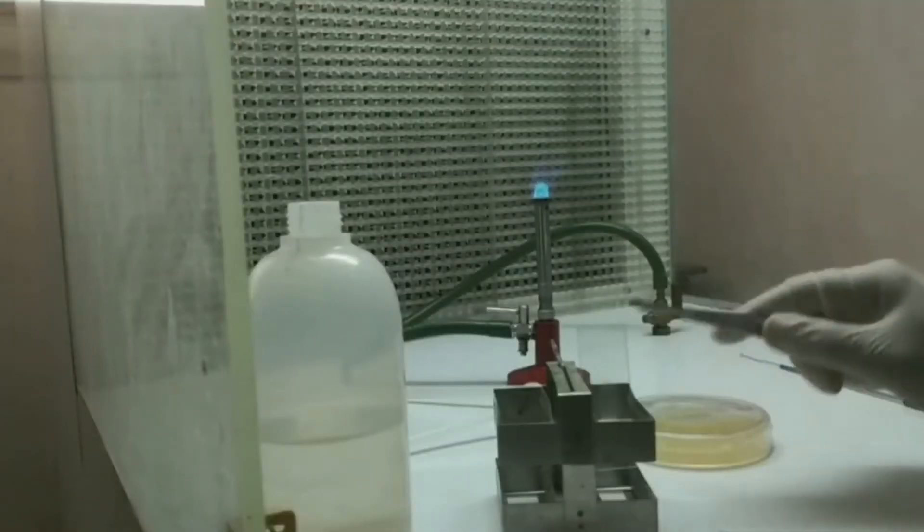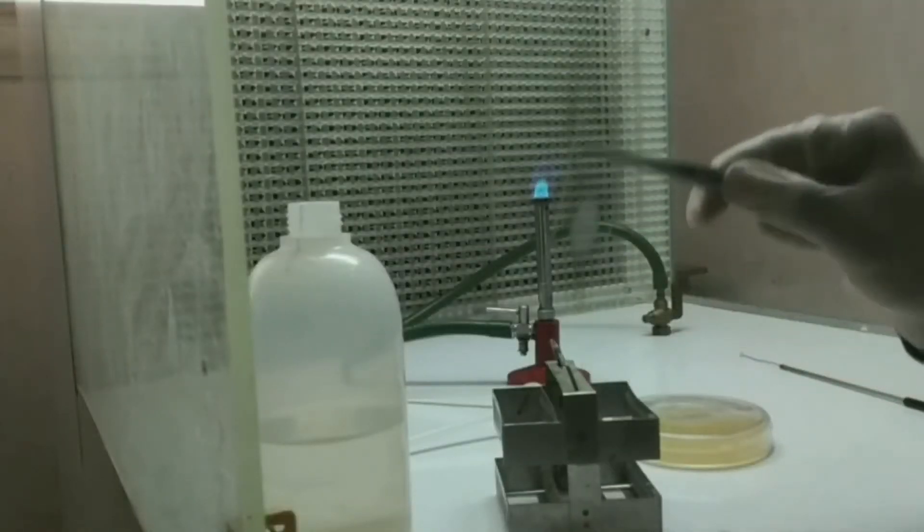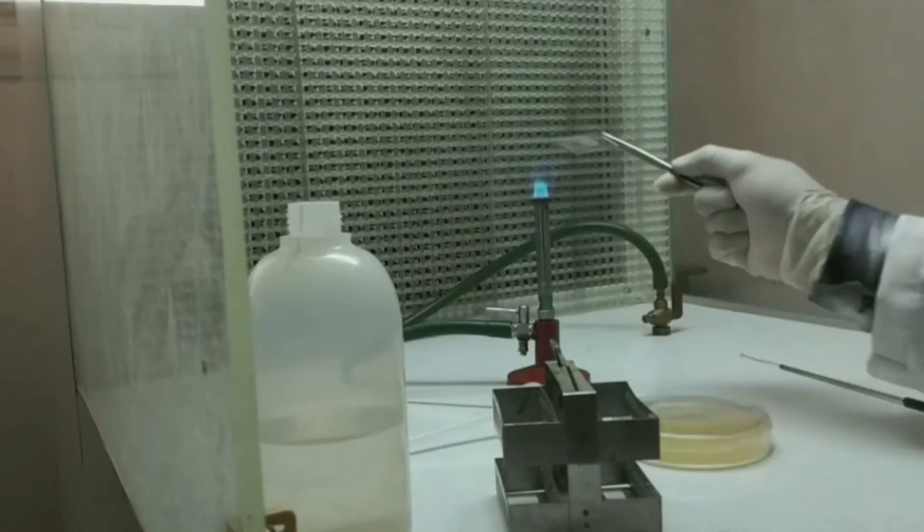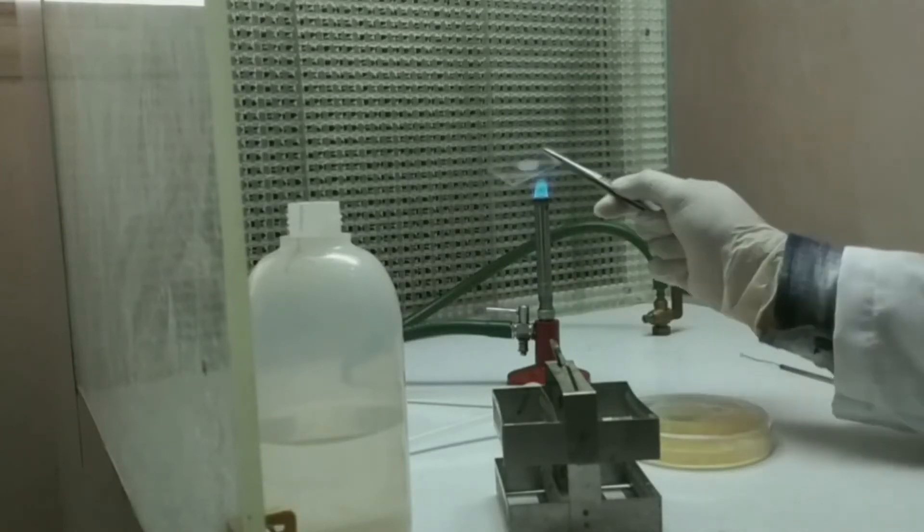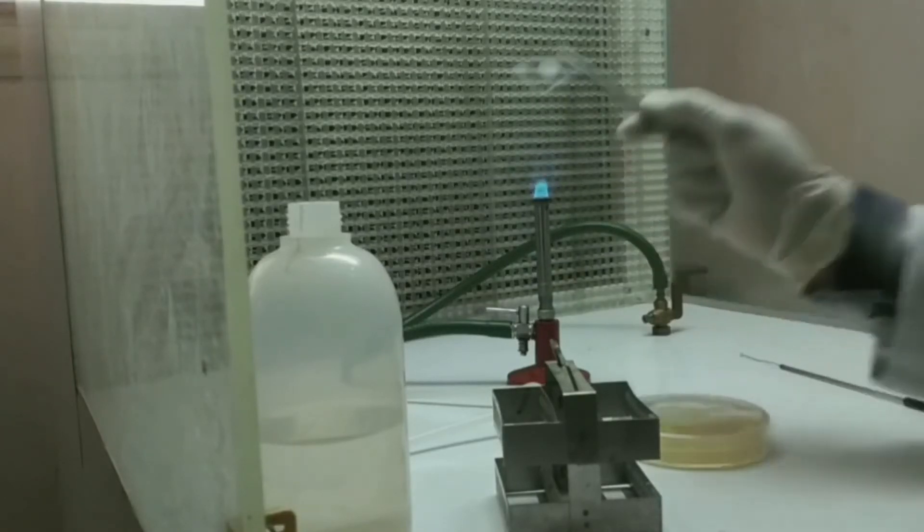The procedure is as follows. First, we have to make a smear. After that, we have to properly heat fix it so that the bacteria will adhere on the surface of the glass slide.